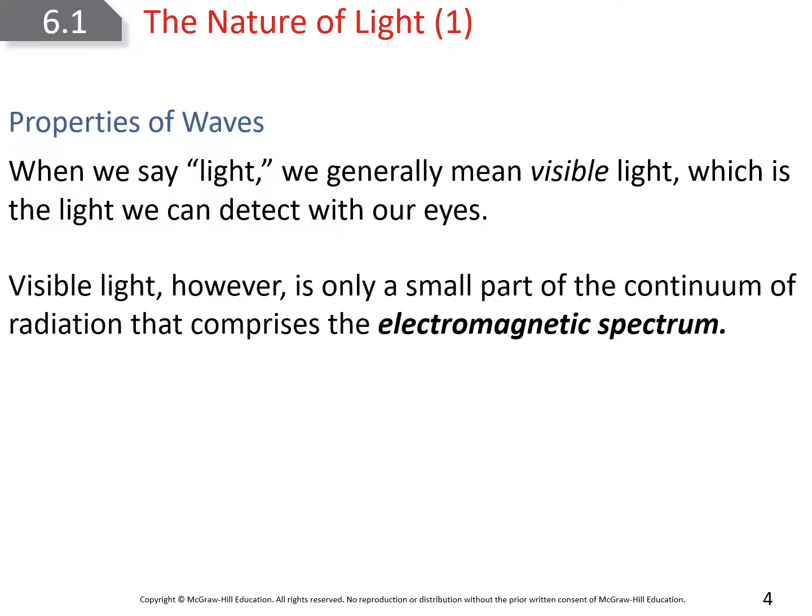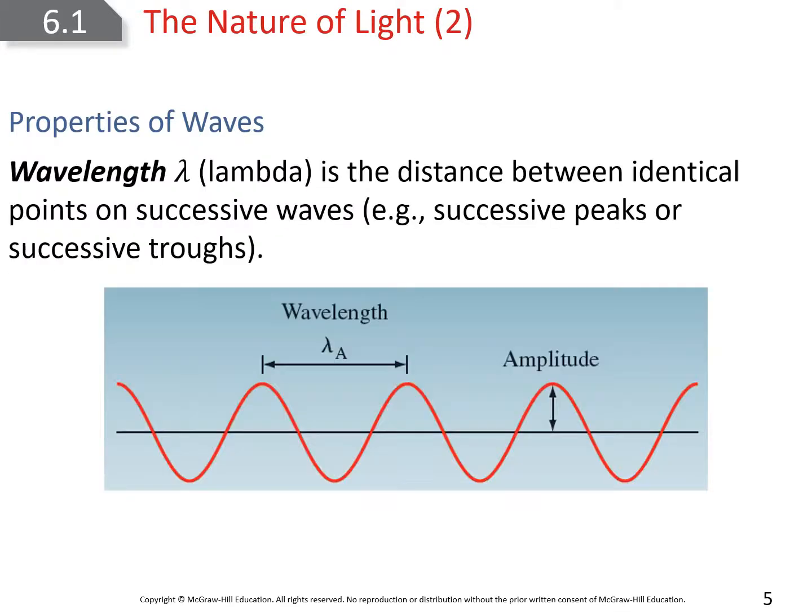When we talk about light, we're going to talk about light in terms of visible light and non-visible light. Visible light is the small part of all the light continuum or the light spectrum. We're going to talk about this in terms of wavelengths and amplitudes and all these other properties.